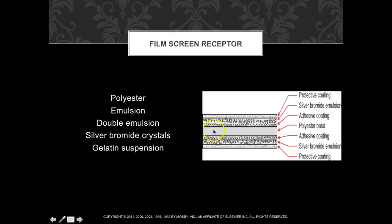Looking at film structure: you have a polyester base that gives it structure, then an adhesive coating, silver bromide crystals, and a protective coating on top. With double-emulsion film, the same layers — adhesive coating, silver bromide emulsion, and protective coating — are repeated on both sides of the polyester base.